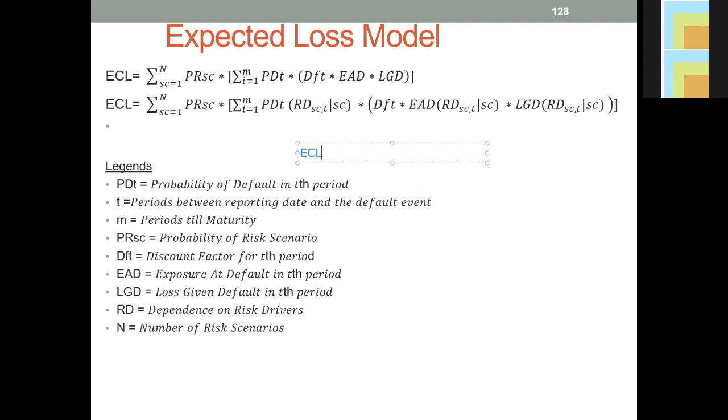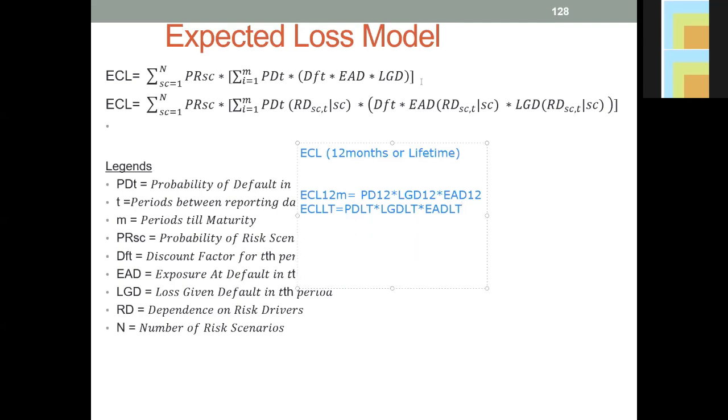So if we are calculating ECL, I said the ECL could either be 12 months or lifetime. So what is ECL for 12 months? ECL 12 months is equal to PD for 12 months multiplied by LGD for 12 months multiplied by EAD for 12 months. So also, ECL for lifetime is equal to PD for lifetime multiplied by LGD for lifetime multiplied by EAD for lifetime.